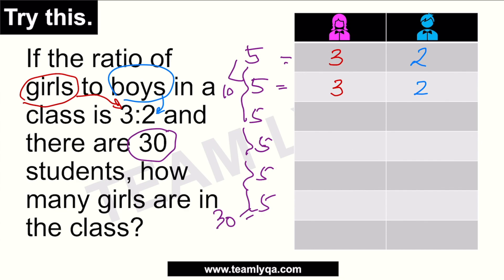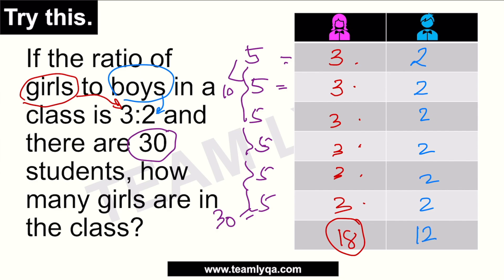So, 30 yung total. Uulit-ulitin lang natin — kung ilang 3 yan, ilang 2 ito. At dahil ang hinahanap natin ay yung girls, ang gagawin natin ay 3 times 6, which gives us 18 girls in total. Kung hinahanap naman yung boys, that would be 2 times 6, which gives us 12. At kapag in-add natin yung 18 at 12, ang kalalabasan ay 30. So, ito yung mas visual na representation of what the partitive proportion problem looks like.